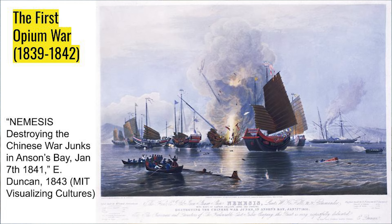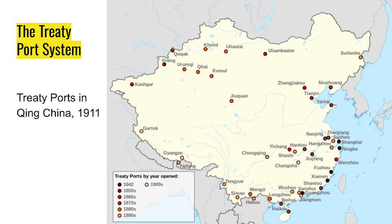The British absolutely trounce China because of their navy and industrialized warfare. One famous ship used in this war is the Nemesis — the first iron steamship used in this conflict. Britain wins this war, and a new system is put in place where it's not just one port open for foreign trade but actually five initially. Hong Kong is also ceded to Britain. Following this, all kinds of foreign powers start to put their claws into China — Great Britain, France, Russia, Germany, and eventually Japan — all claiming certain ports. This is a period of semi-colonialism.